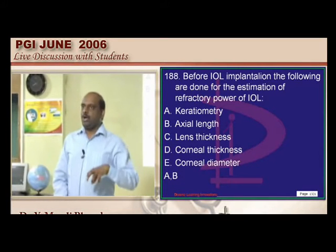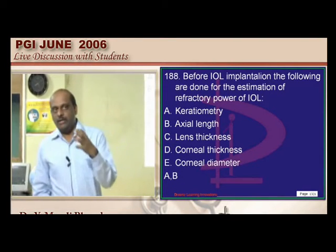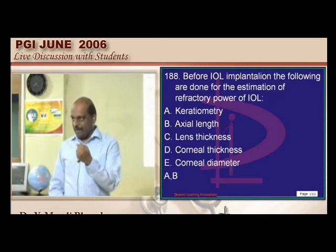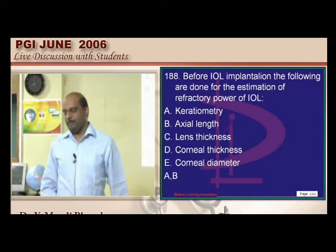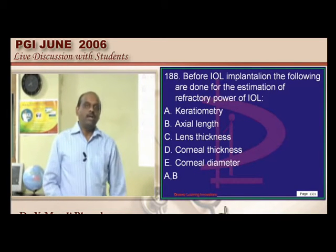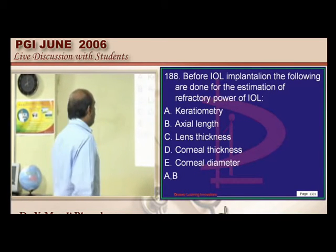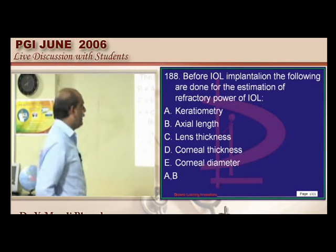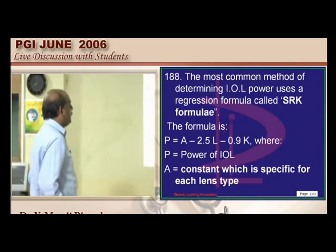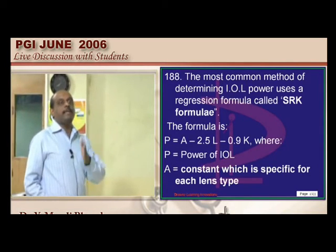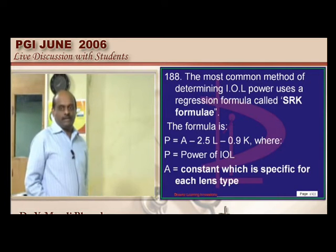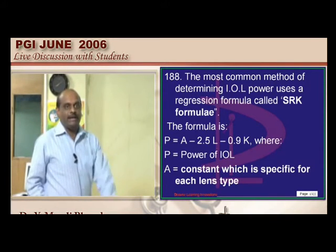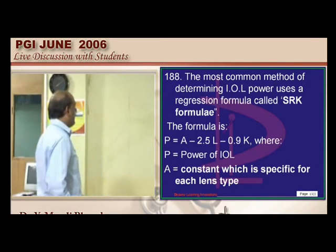If you have placed an intraocular lens and you want to calculate the required power of that IOL which you want to place, what are the various tests that need to be done? What is the SRK formula for the power of the IOL and how do you calculate that?